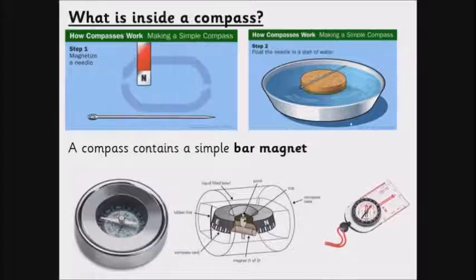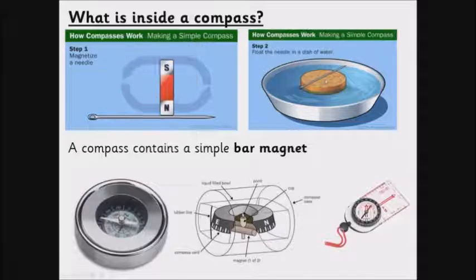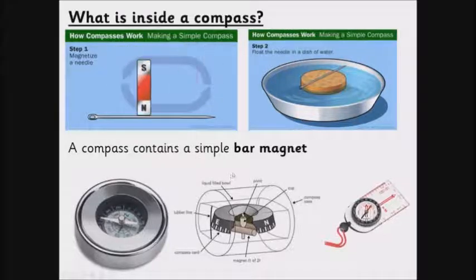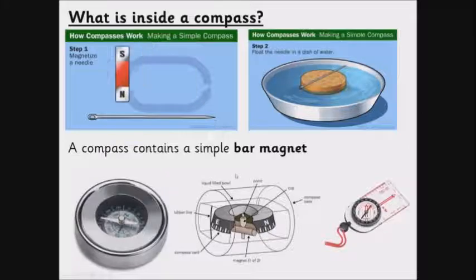If you place it onto some kind of cork on a dish of water, then that could or should align itself with the Earth's magnetic field. So really all compasses, any compass that you've used or could use, will have a simple bar magnet, and I've got some pictures underneath here of some general compasses.